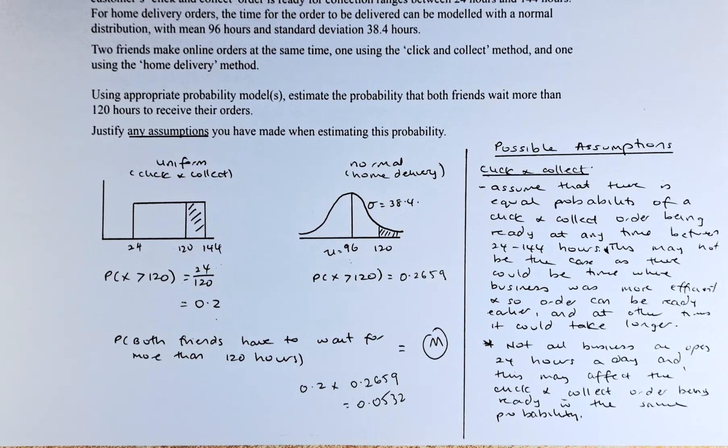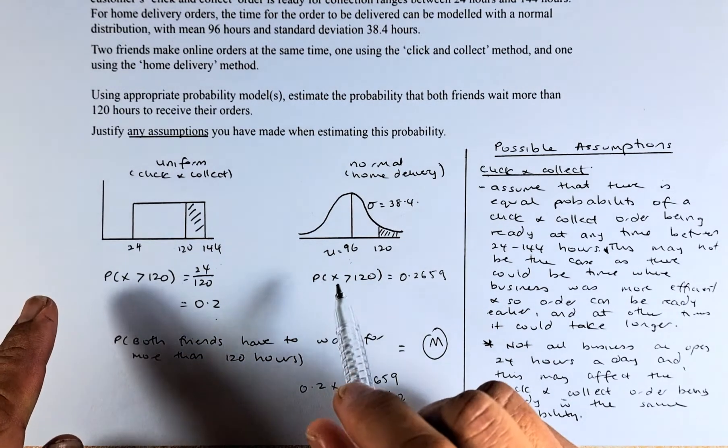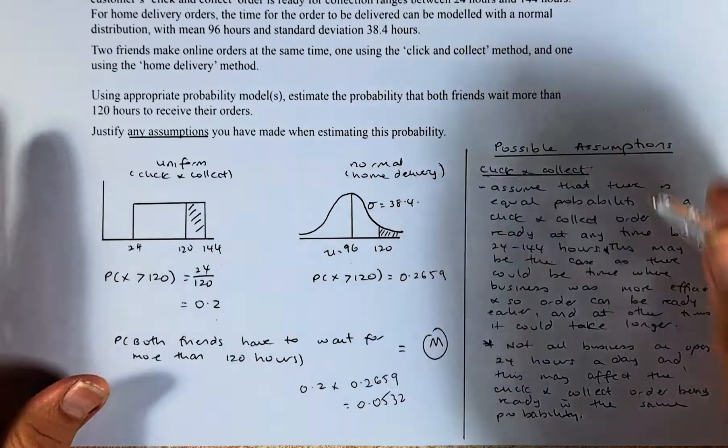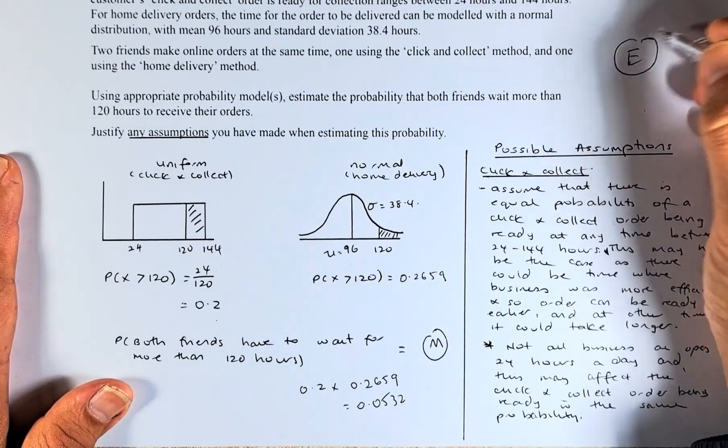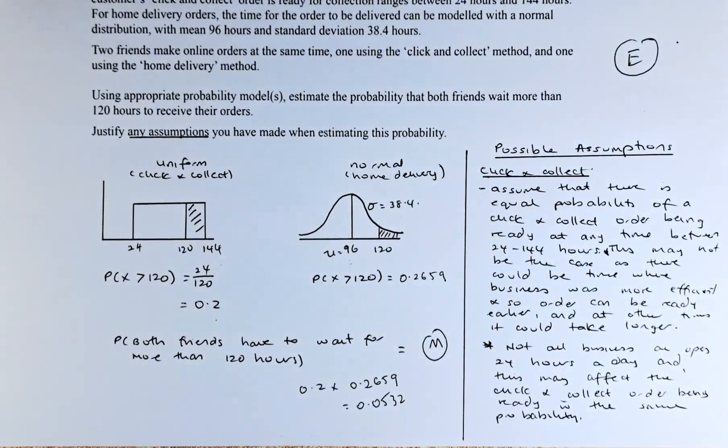Also, not all businesses are open 24 hours a day in New Zealand, and that may affect the click and collect order being ready at the same probability. Those are the two possible assumptions. If you can put that answer together with the assumption, you get excellence for this paper. Watch out for the next video which will do question 2a of this paper, which will be a Poisson distribution. Have a good day everyone, and I'll see you in the next one.